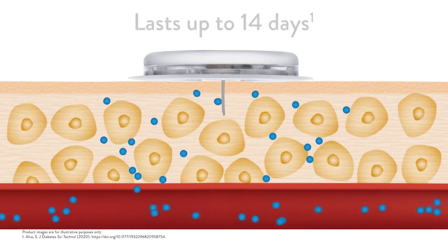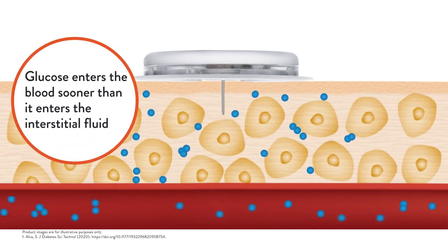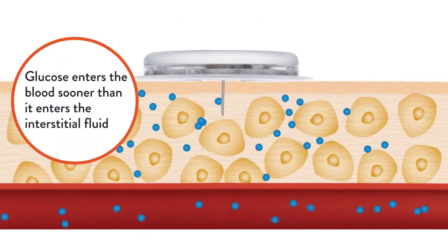When your glucose is changing rapidly, it rises in the blood sooner than it rises in the interstitial fluid.